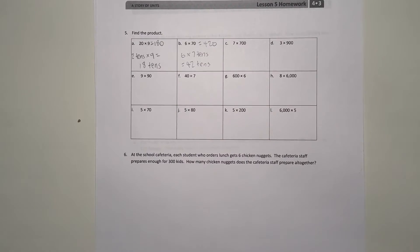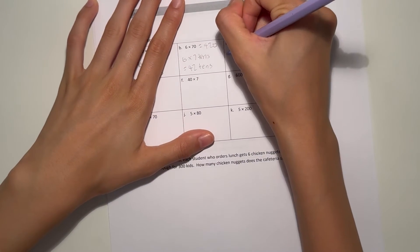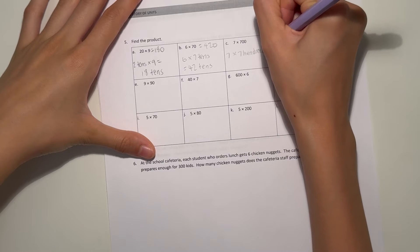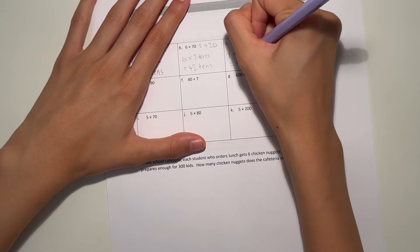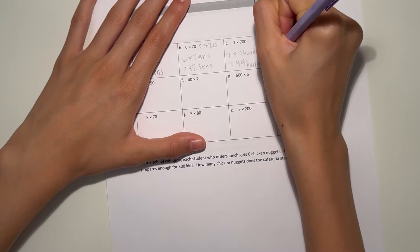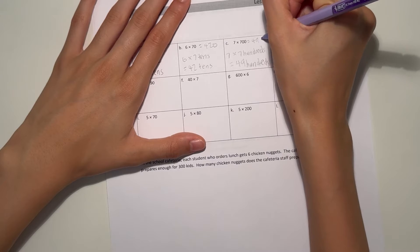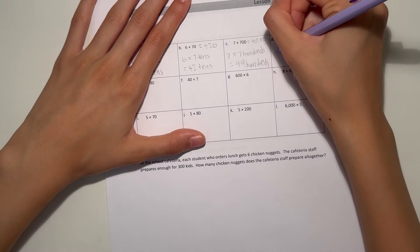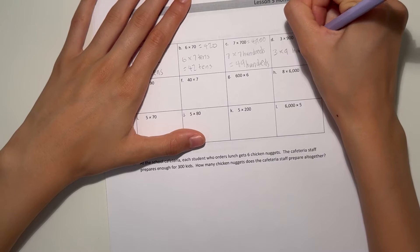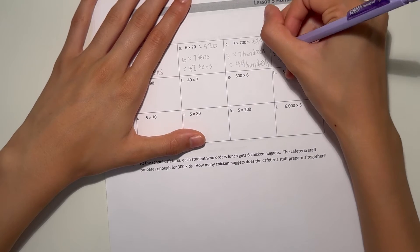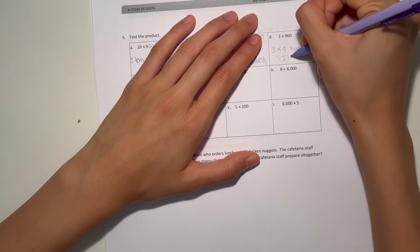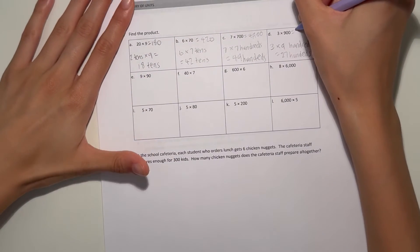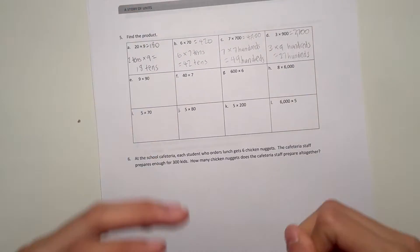C: seven times seven hundred. That's seven ones times seven hundreds. Seven times seven is forty-nine, and we add in the hundreds. Forty-nine hundreds would be four thousand nine hundred. D: three times nine hundred. Write it as three times nine hundreds. Three times nine is twenty-seven, so twenty-seven hundreds. One hundred has two zeros at the end, so twenty-seven hundreds would also have two zeros — that's two thousand seven hundred.